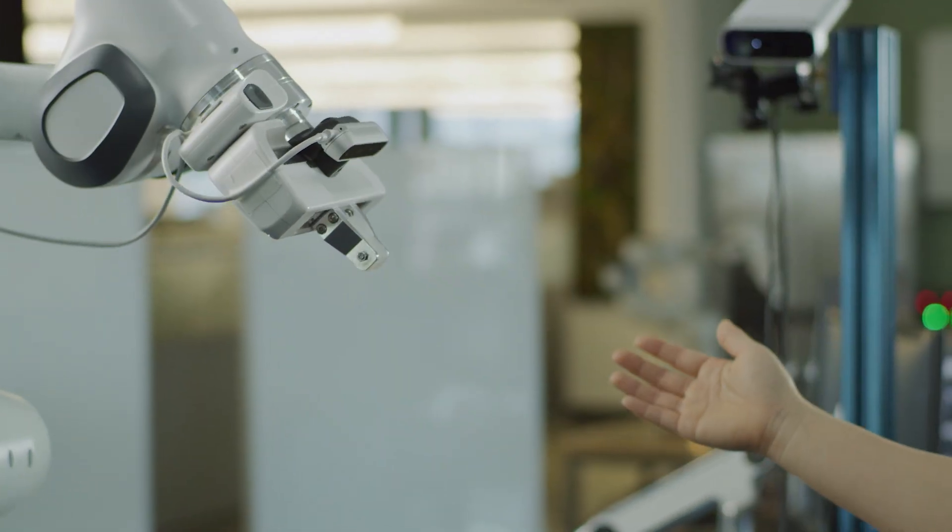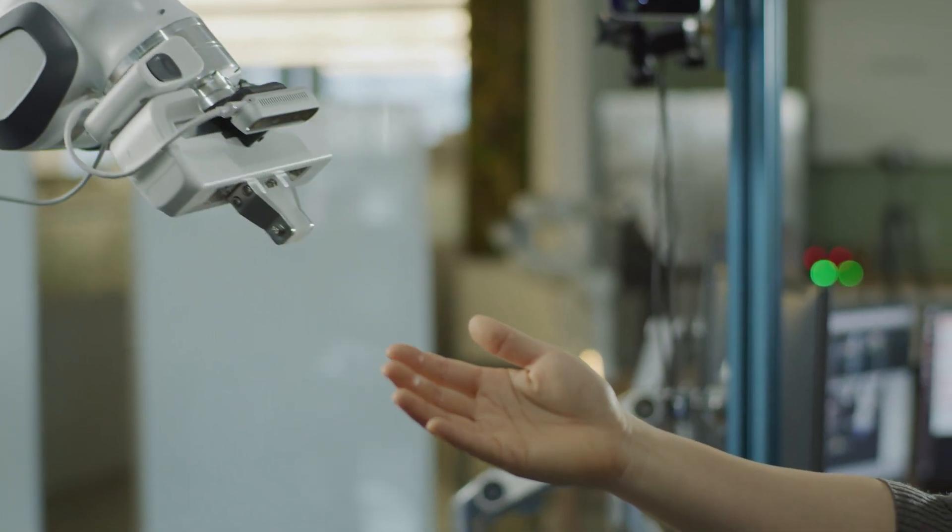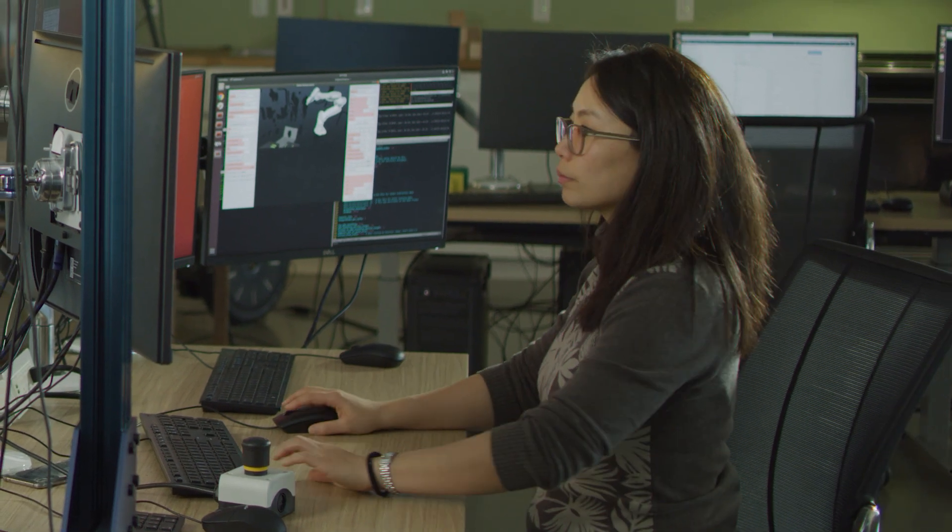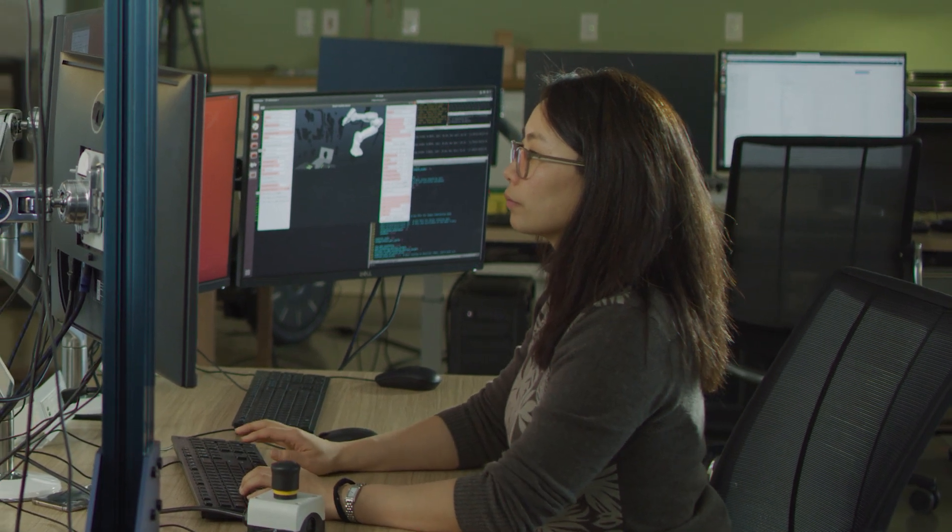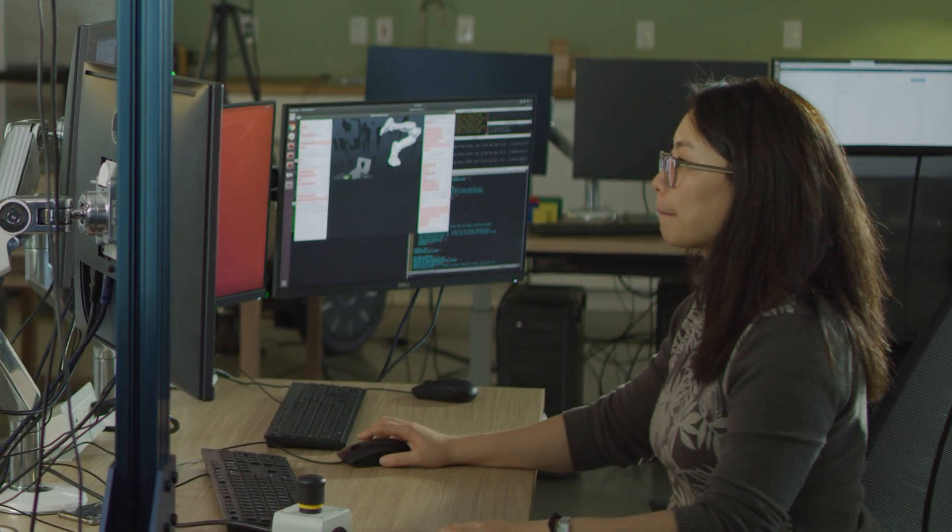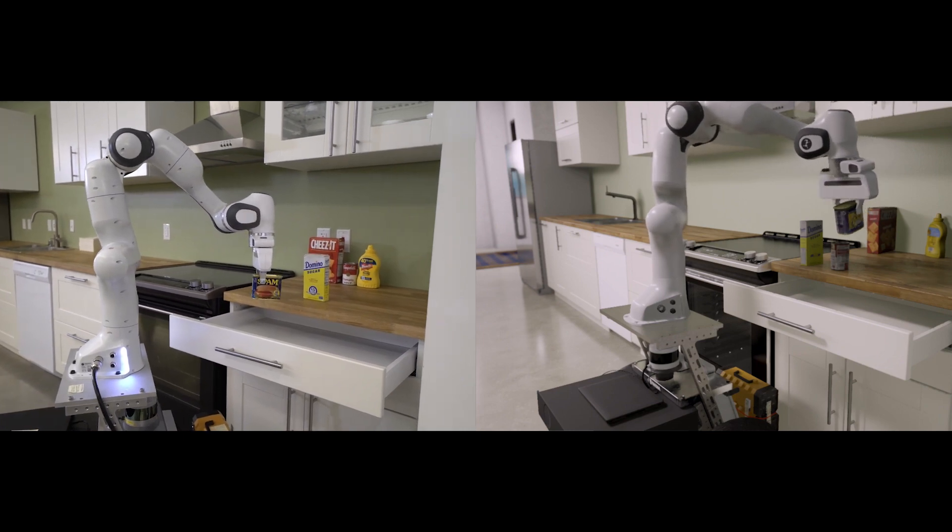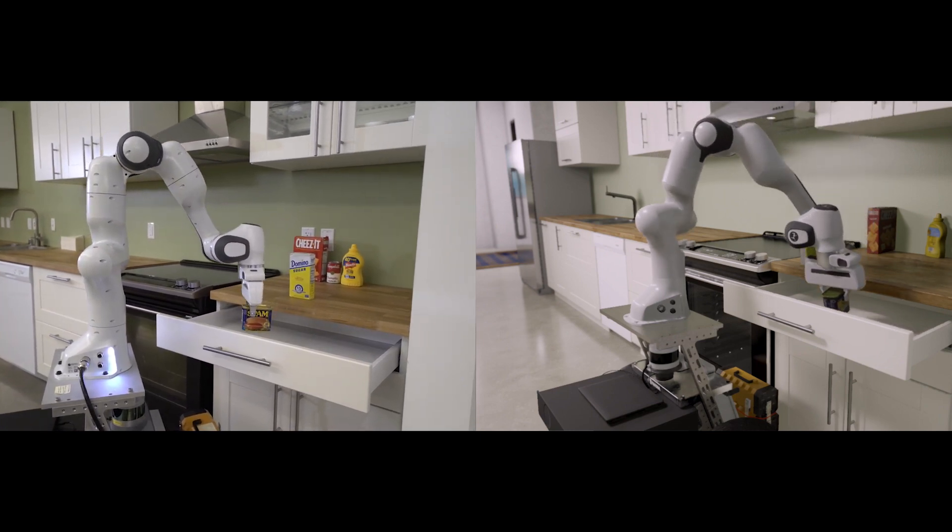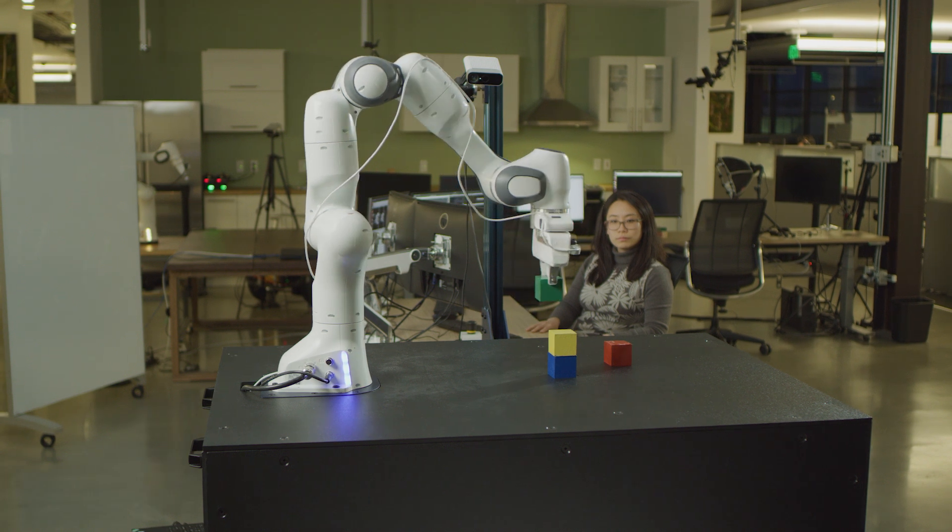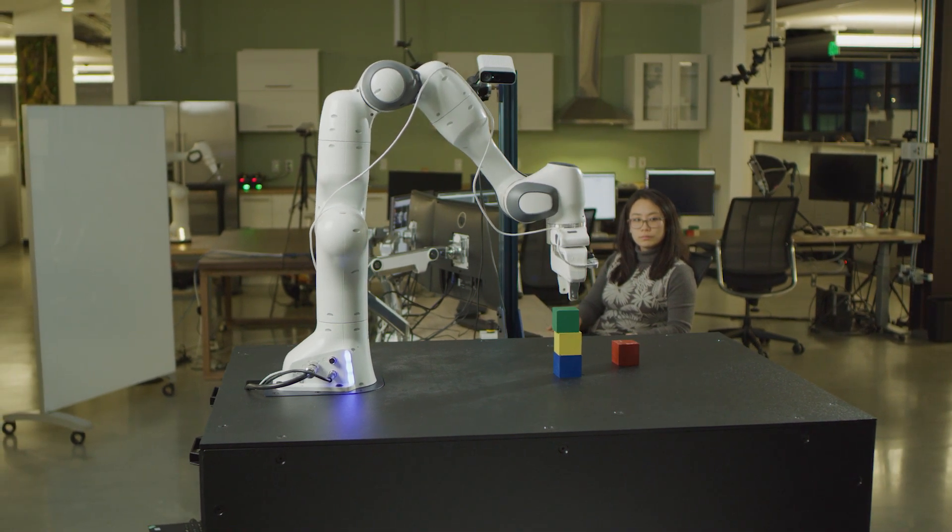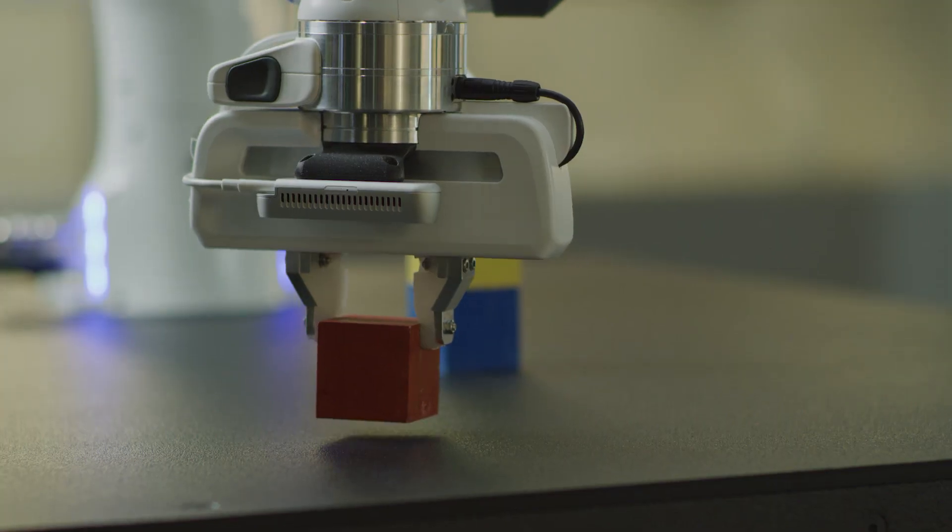ISAC SIM is going to drastically change how we go about developing this next generation of robots. Rather than having to program everything by hand and testing everything on the real hardware, which can be very expensive, time consuming and even dangerous, we can do all these tasks in the simulation which will provide the experience that these robots need to learn to perform all these complex tasks so much faster and easier.